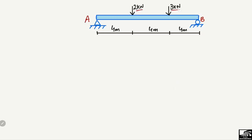We will analyze a simply supported beam with two concentrated loads — 2 kilonewton and 3 kilonewton — acting at different points on the beam. There is a hinge support at A and a roller support at B. The hinge support can resist both a vertical reaction RA and a horizontal component RAX.